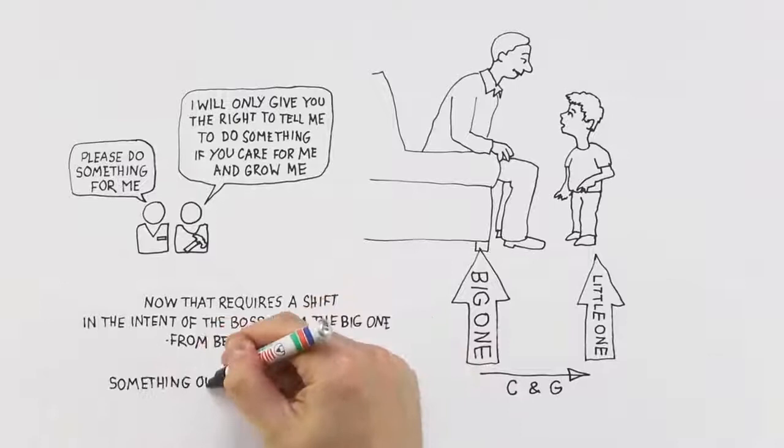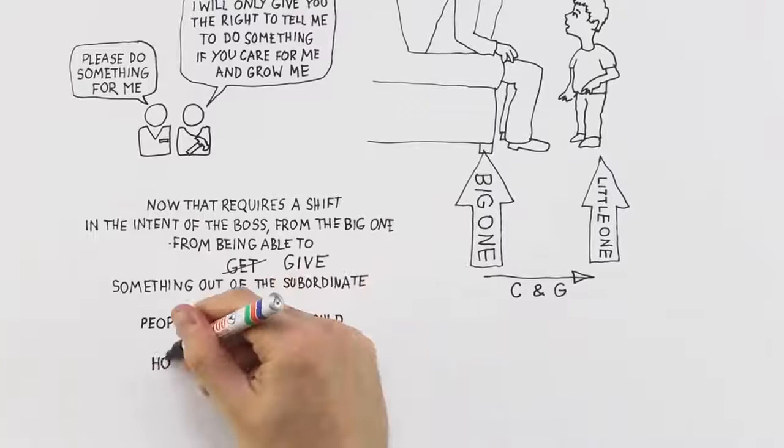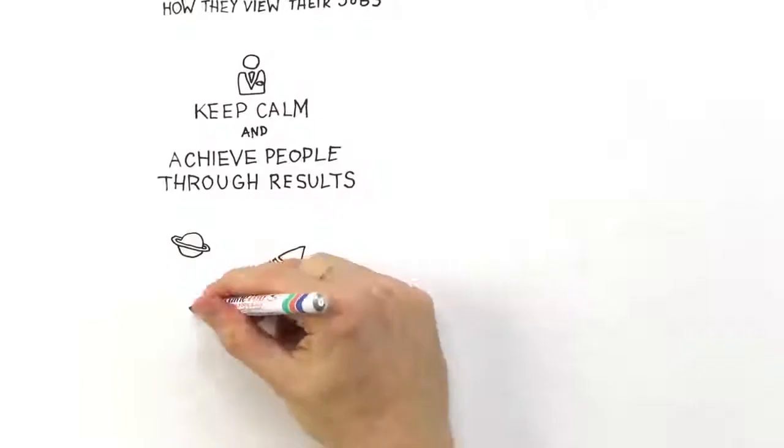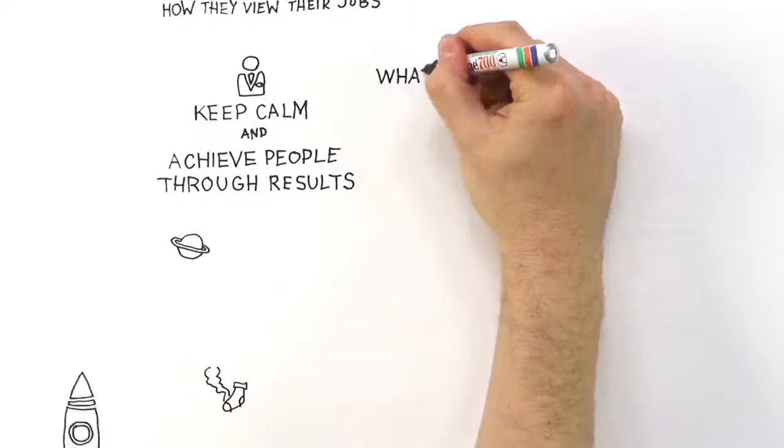Now that requires a shift in the intent of the boss from the big one, from being here to get something out of the subordinate to being here to give something to the subordinate. What care and growth requires of people in command relationships is that they invert how they view their jobs. Their role isn't to achieve a result through people, their role, and it sounds bizarre, is to achieve people through results. And very often people in executive positions say you've just left the planet, you're smoking your socks, and that doesn't make sense.